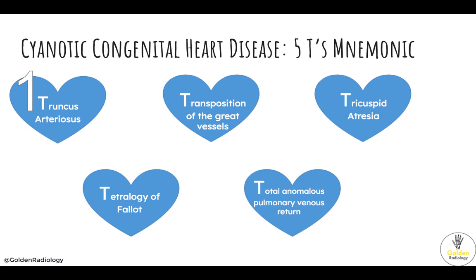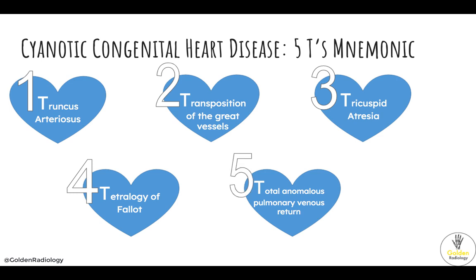Transposition of the great vessels is when the aorta and the pulmonary artery are switched around — the aorta comes off the right ventricle and the pulmonary artery comes off the left. Tricuspid atresia is when the tricuspid valve is absent, so blood can't flow into the right ventricle; the only path for blood out of the right atrium is into the left atrium through a patent foramen ovale. Total anomalous pulmonary venous return is when the pulmonary veins drain into the right atrium or vena cava instead of the left atrium, resulting in oxygenated blood mixing with deoxygenated blood, which then goes through a patent foramen ovale into the systemic circulation.